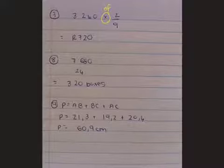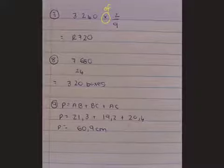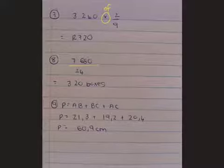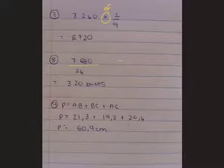For number eight, Ben needs to pack 7,680 apples into boxes that contain 24 apples each. How many boxes does he need? So it's dividing. So you have a certain amount of apples, you've got to break them up into groups of 24. Breaking up into groups is division. So 7,680 divided by 24 is 320 boxes.